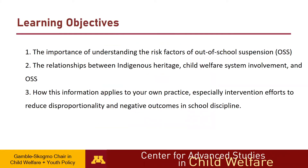This module has three learning objectives. You will learn why it is important to understand the risk factors that lead to students being suspended out of school, as well as the relationships between students having Indigenous heritage, being involved in the child welfare system, and out-of-school suspension. We also hope you will be able to reflect on the applications this information may have for your practice, especially in terms of efforts to reduce disproportionality in school discipline and find alternative solutions to student misbehavior.